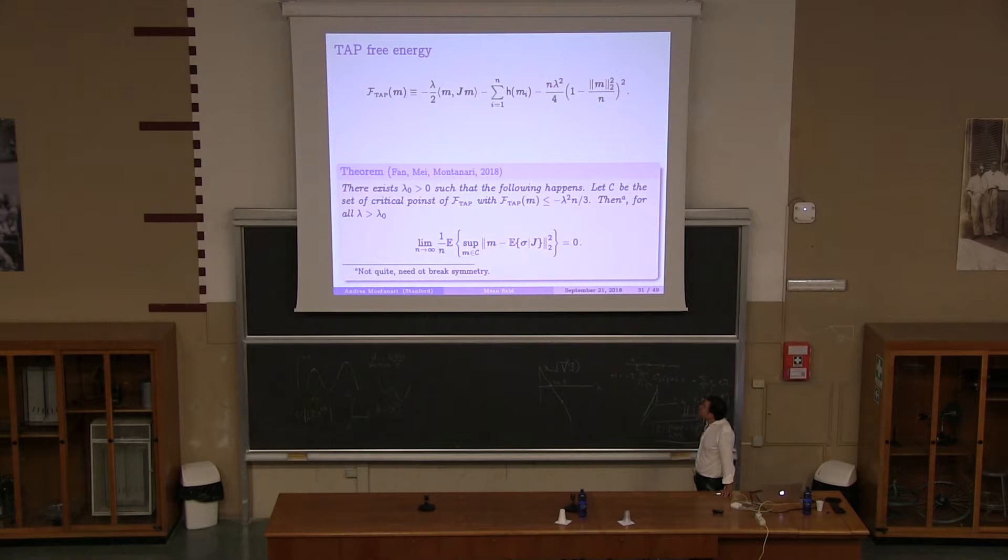Okay. So, of course, we go to the TAP free energy. Okay? And this is the theorem that we prove. We prove that there exists a constant lambda zero, such that if lambda is lambda zero, the following happens with high probability. If you look below a level, a certain level... Okay? If you look below a certain level in energy... So, this is the free energy. And this is M, zero. If you look below a certain level, all the minimizers look at all the critical points. So, C is the set of critical points of this free energy. All the critical points of the free energy are very close to the Bayes optimum. I mean, to the posterior expectation, to the thermodynamic mean.